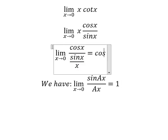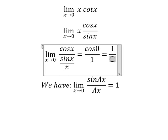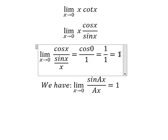Now we have cosine 0 over number 1. We have 1 over 1, and then we got the final answer.